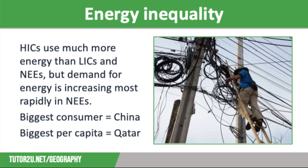Finally, considering energy inequality: HICs use much more energy than LICs and NEEs. This is because the most developed countries have the highest levels of technology, intensive agriculture, and industry, which all require power, along with domestic use and transportation. However, the demand for energy is increasing most rapidly in newly emerging economies as they develop.